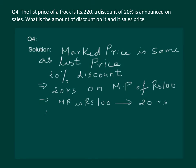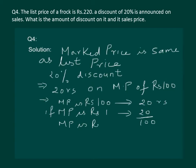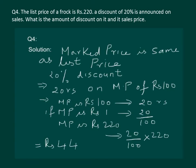If the marked price is rupees 1, then the discount would be 20 divided by 100. So if the MP is rupees 220, then the discount would be 20 divided by 100, multiplied by 220, and on solving this we get rupees 44 as the discount. So the first part is solved — the discount is rupees 44.